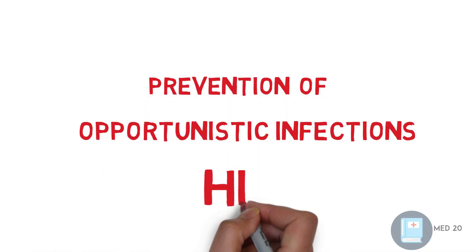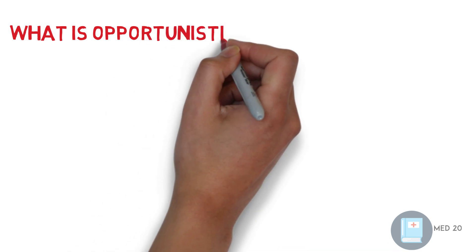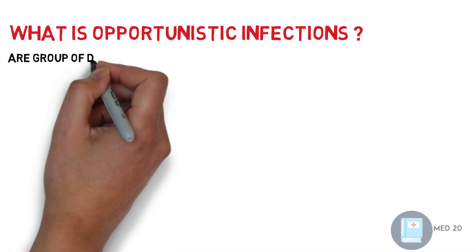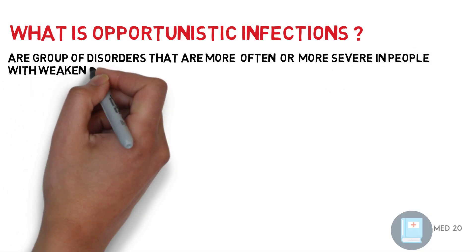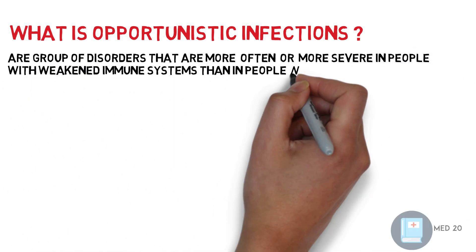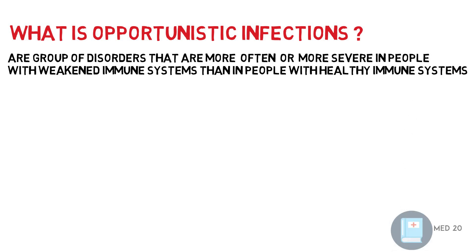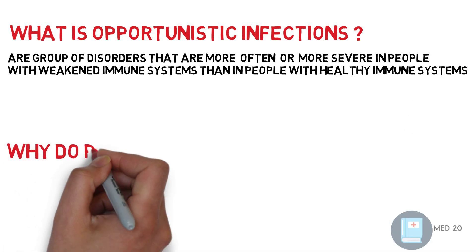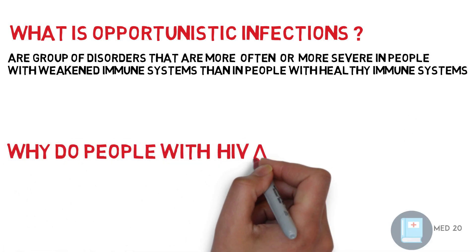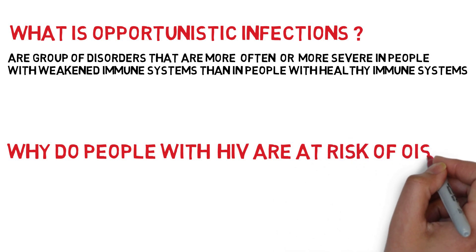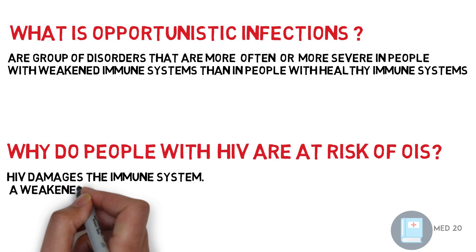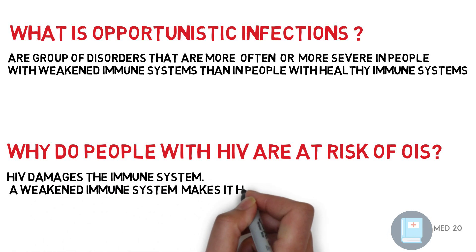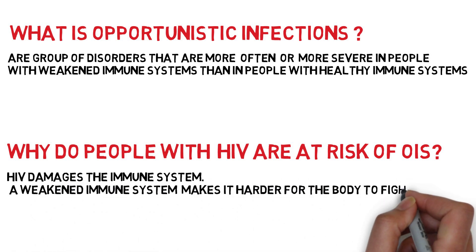Opportunistic infections in HIV. What is an opportunistic infection? They are groups of disorders that are more often or more severe in people with a weakened immune system than in people with a healthy immune system. But why are people with HIV at risk for opportunistic infections? HIV damages the immune system, and a weakened immune system makes it harder for the body to fight off opportunistic infections.